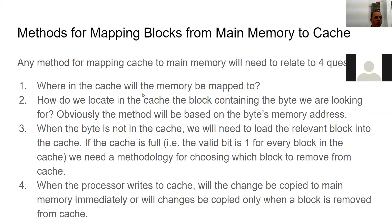We also have to answer the question: how do we locate in the cache the block containing the byte we need? In other words, once we've mapped it and put it there, how do we find it? It's kind of the reverse process of mapping, but we obviously need to explain how we're going to find it.